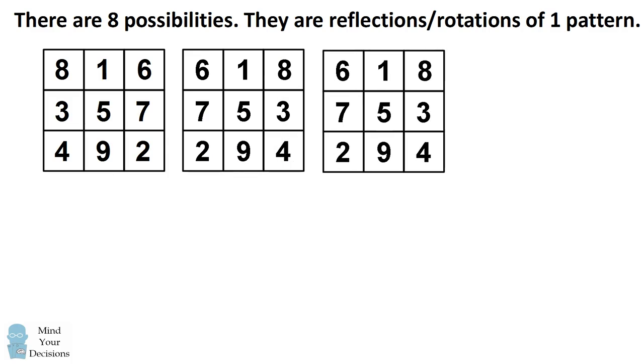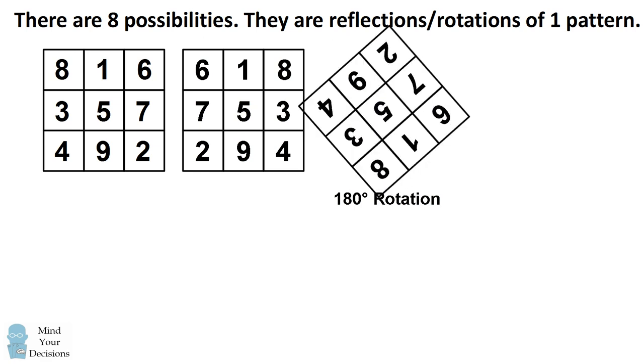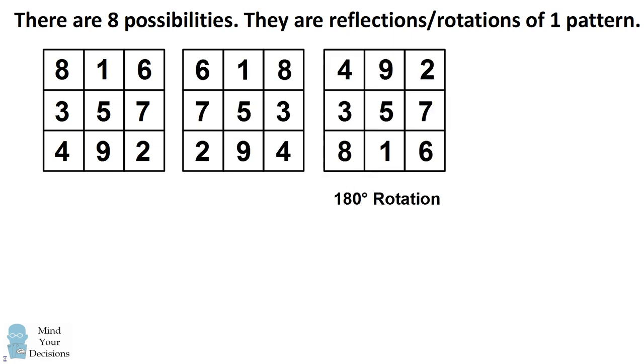Let's make a copy of this second square. I'm going to rotate 180 degrees. And now I'm going to bring the numbers right side up. This was the third magic square in our list.